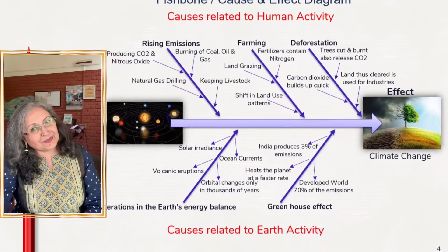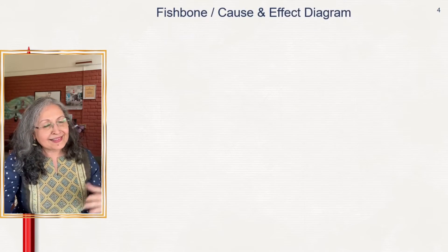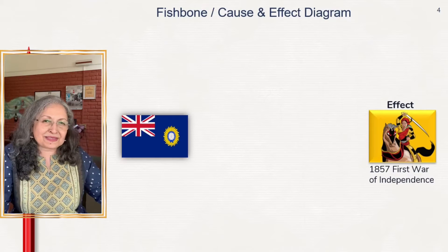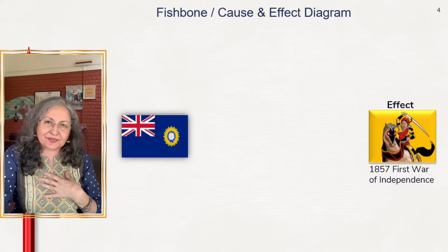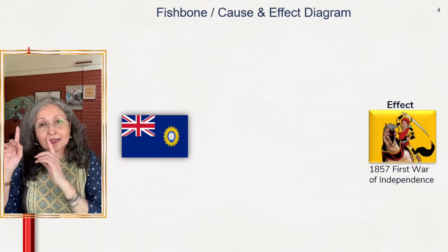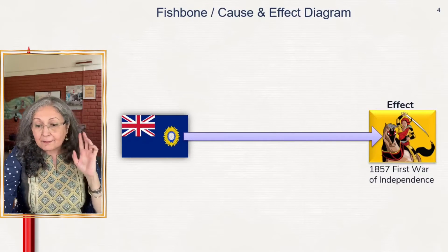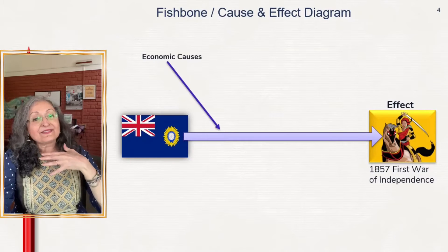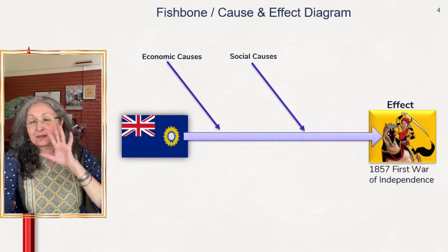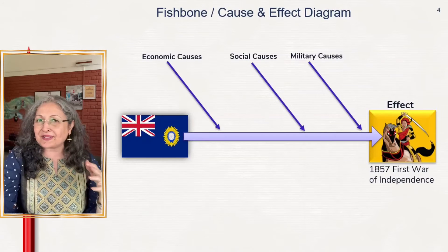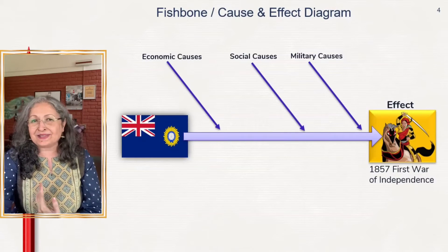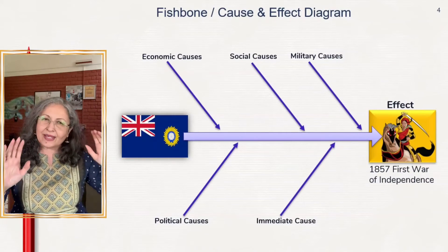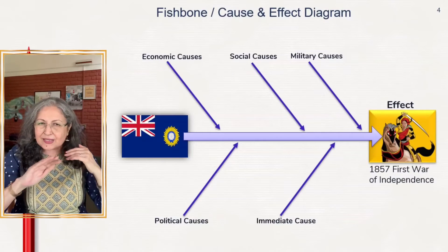One example is not enough, so I have another one from history. The first war of independence — they called it the Sepoy Mutiny but we like to call it the first war of independence. The effect is the 1857 war of independence. What were some of the causes? There are economic causes, social causes, military causes, and political causes, and then there is always an immediate cause — just like we can see now in the Russia-Ukraine war.